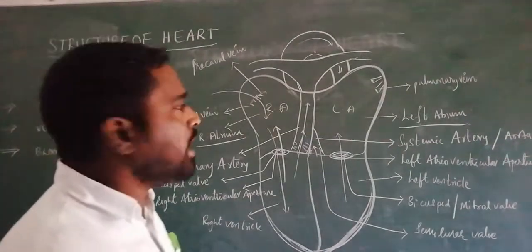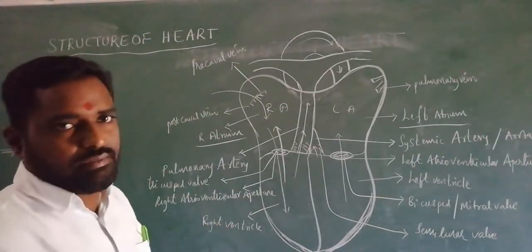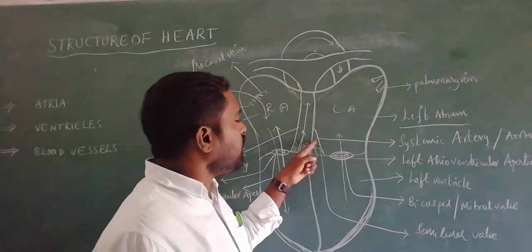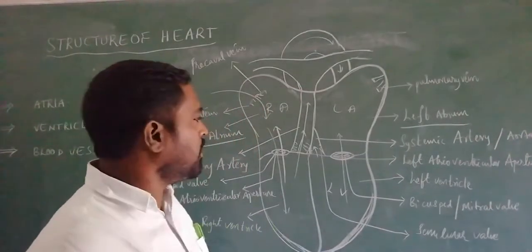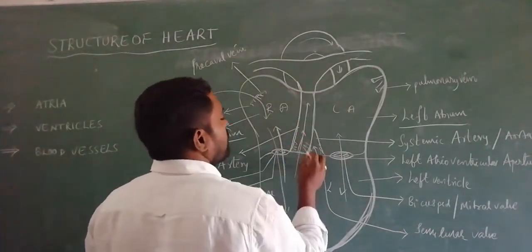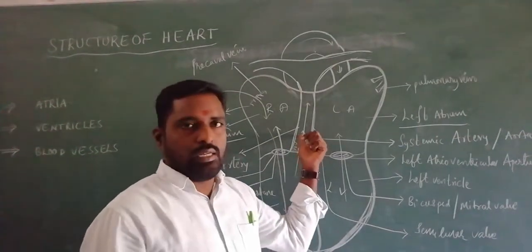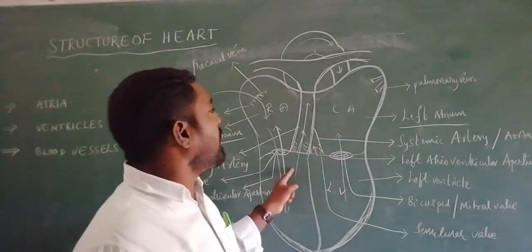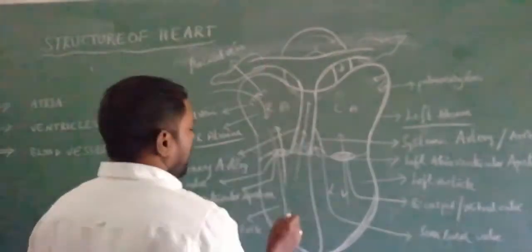Now for the blood vessels associated with the heart: the arteries include the aorta (systemic aorta), which is the largest artery and supplies oxygenated blood from the left ventricle to the body parts. The pulmonary artery — a pair of pulmonary arteries — supplies deoxygenated blood to the lungs for oxygenation from the right ventricle. The key difference: systemic artery supplies oxygenated blood to body parts, while pulmonary artery supplies deoxygenated blood to the lungs.